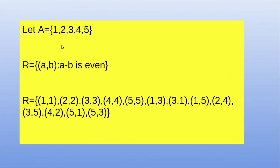Consider a set A = {1, 2, 3, 4, 5} and a relation R on this set A defined as the set of all ordered pairs (a,b) such that a minus b is even. In roster form, R = {(1,1), (2,2), (3,3), (4,4), (5,5), ...} because 1 minus 1 is 0 which is even, 5 minus 5 is 0 which is even, and also 1 minus 3 is minus 2 which is even.